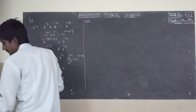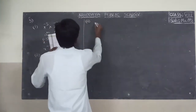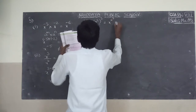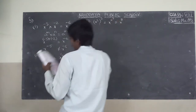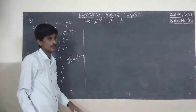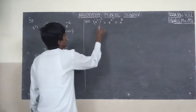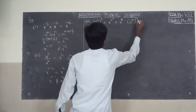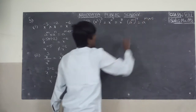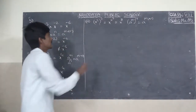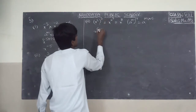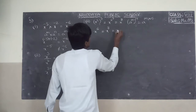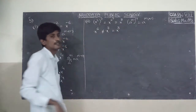Third one: X squared whole cube equals X to the power of 2 cube equals X to the power of 8 as given. Using A to the power of M whole to the power of N equals A to the power of M into N: X to the power of 2 into 3 equals X to the power of 6, not X to the power of 8. These are not equal.